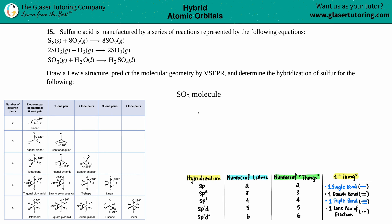Number 15. Sulfuric acid is manufactured by a series of reactions represented by the following equations, and they give three equations. The question we have to answer is: draw the Lewis structure, predict the molecular geometry by VSEPR, and determine the hybridization of sulfur for the following — in this case, the SO3 molecule.